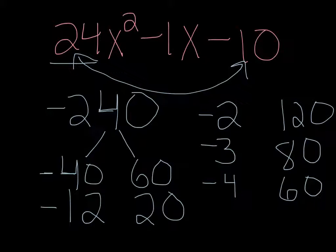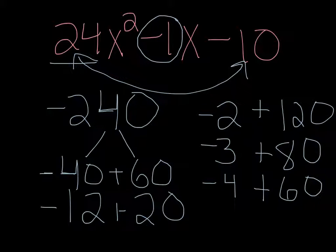So let's start looking at these pairs. If we were to add them together, what we want to get is negative 1, because that's our middle number. And right now we're not anywhere near that. So negative 40 and 60 is 20, negative 12 and 20 is 8, negative 2 and 120 is 118, negative 3 and 80 is 77, and negative 4 and 60 is 56.